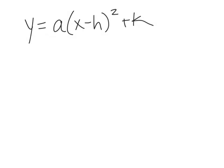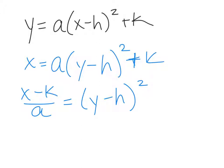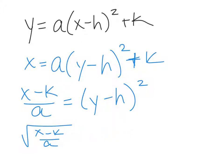We're going to continue talking about finding the inverse of a function. I've got the vertex form of a parabola — a quadratic — and when we want to find the inverse, it's pretty straightforward to switch your x and y and then solve for y. I can then subtract k, divide x minus k by a, take the square root of both sides, and then add h to both sides. And that is the inverse of the function.